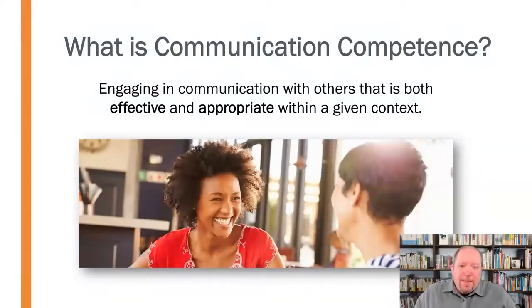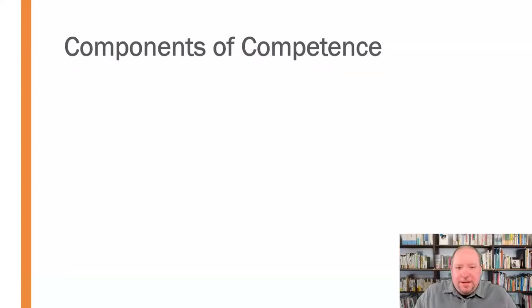So that context is completely unique. Are we able to communicate effectively and appropriately within that context, and change and adapt and adjust our communication to the needs of that particular situation? That's what we're talking about when we talk about communication competence — can we engage both effectively and appropriately with others in that given context? Let's take a look at those components of communication competence a little closer.